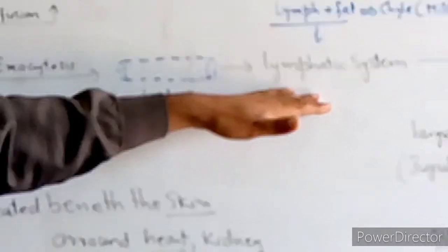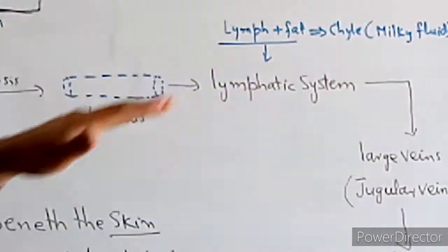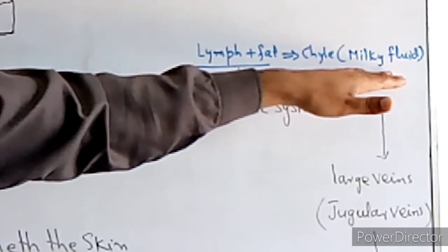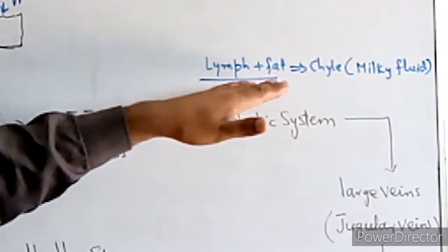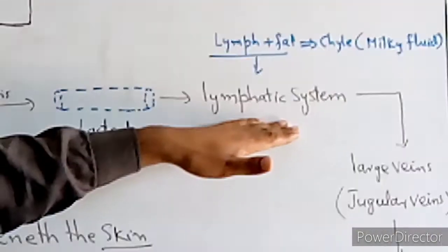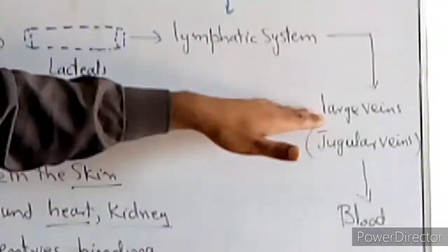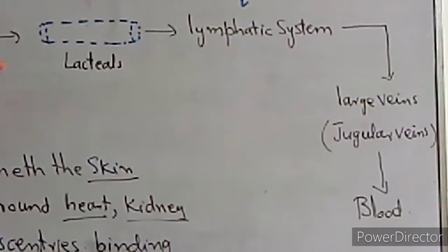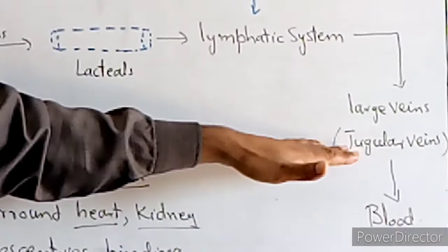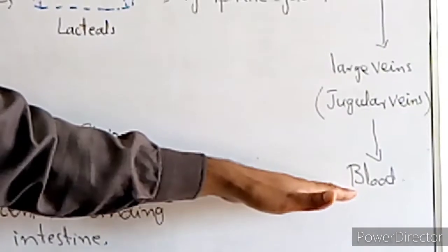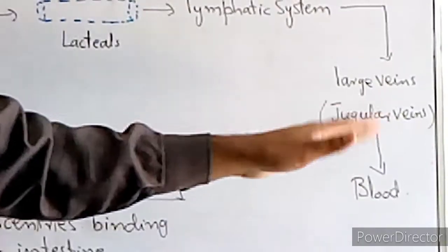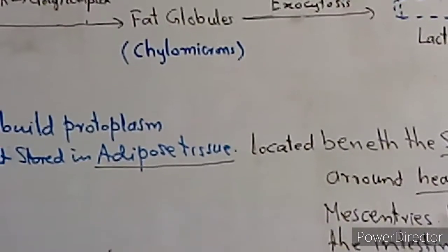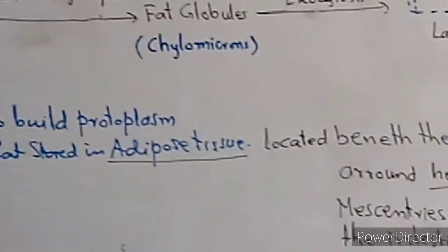The transport structure is called lacteals — lacteal cells — which are part of the lymphatic system. The fat enters the lymph vessels and travels through the lymphatic system, then enters the blood via large lymphatic vessels.